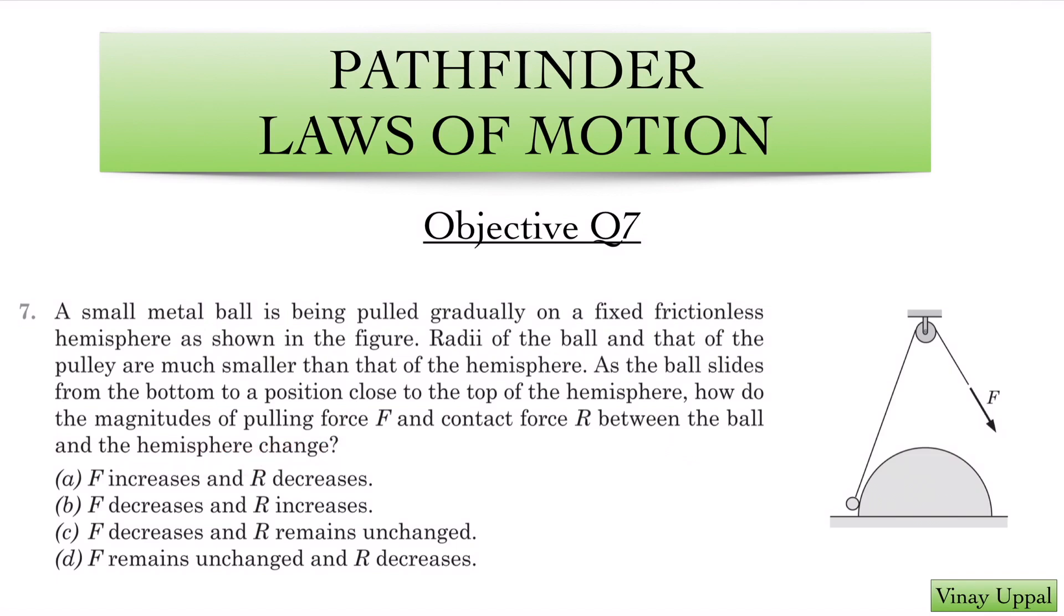As this ball moves upwards, obviously the angle of the string will change. How does the pulling force change in order to keep the ball moving slowly? Now that is the key point here, pulled gradually, and that means that the acceleration is 0. So that is the key point in this question.